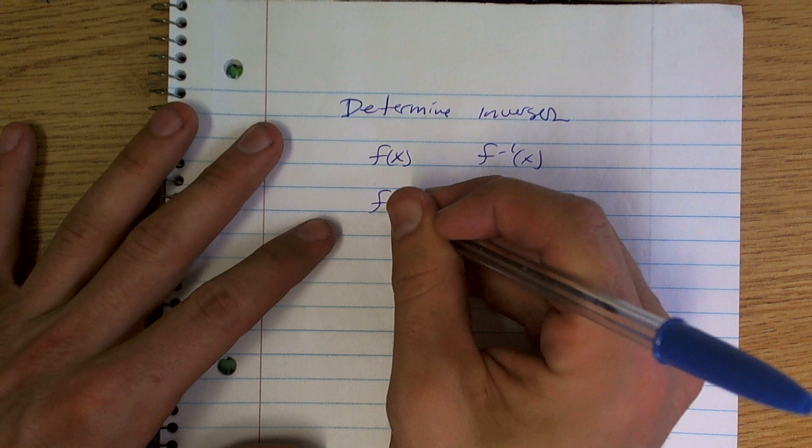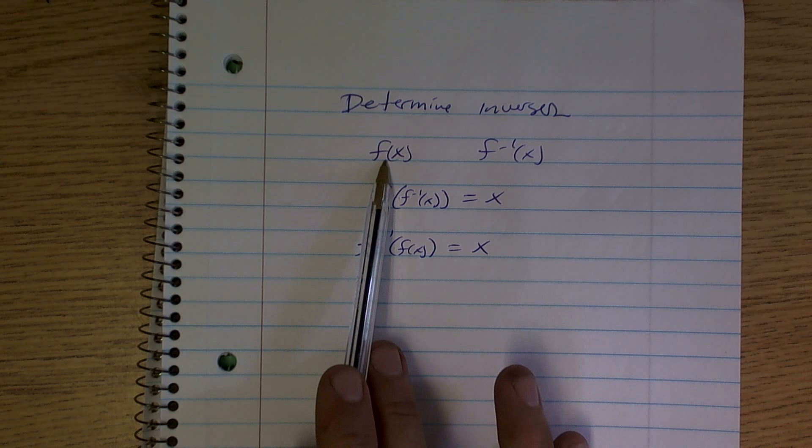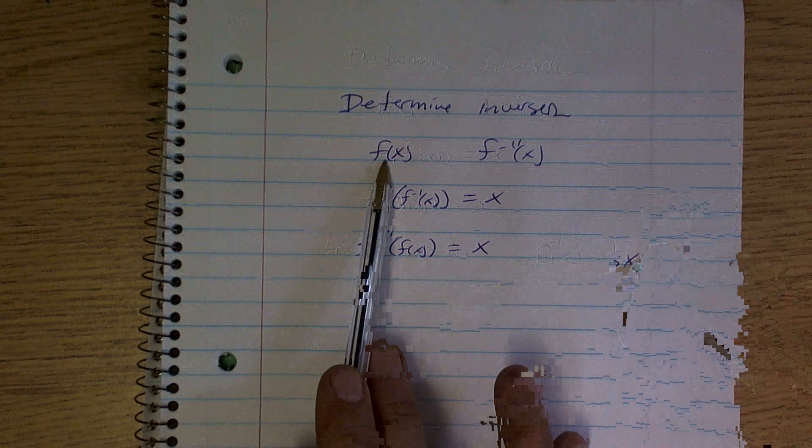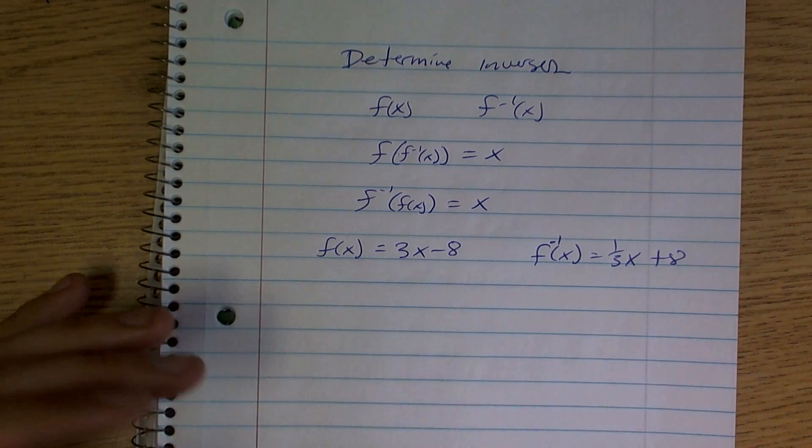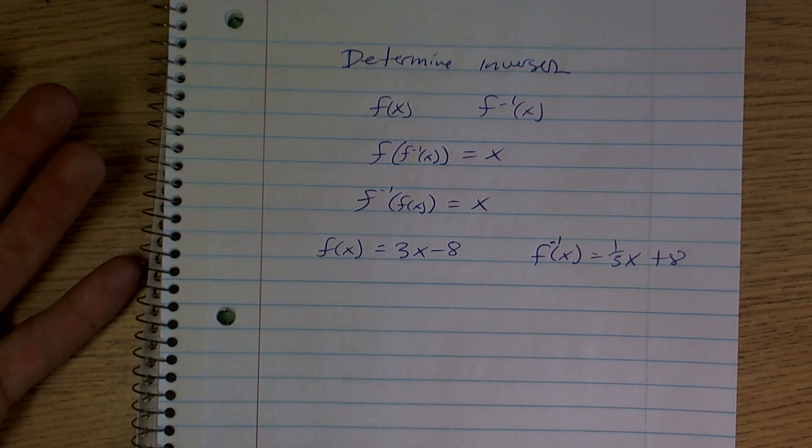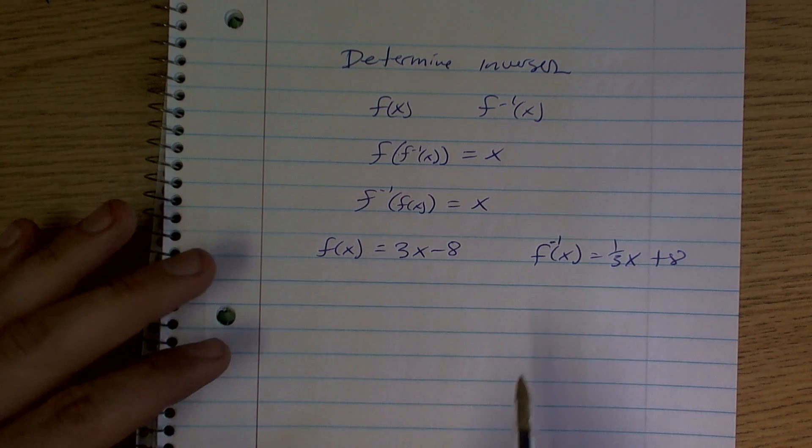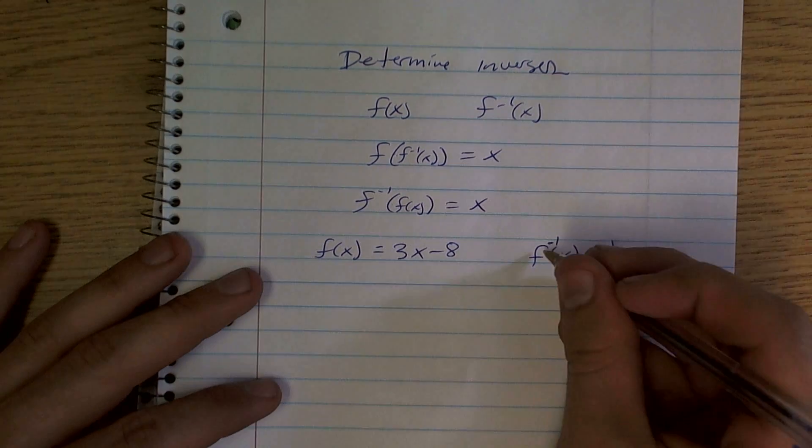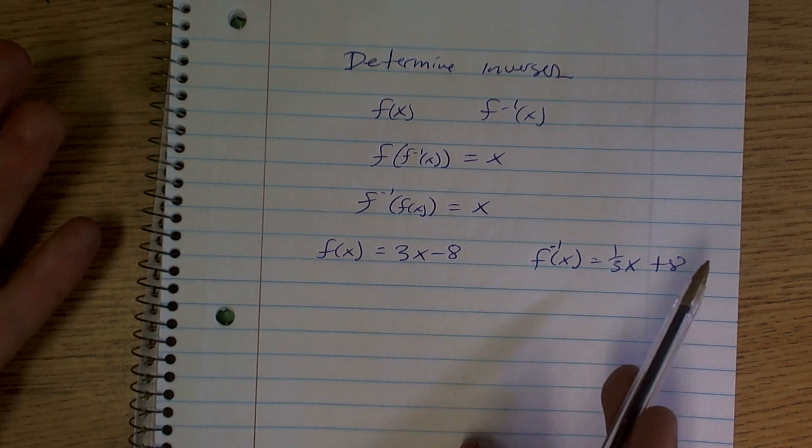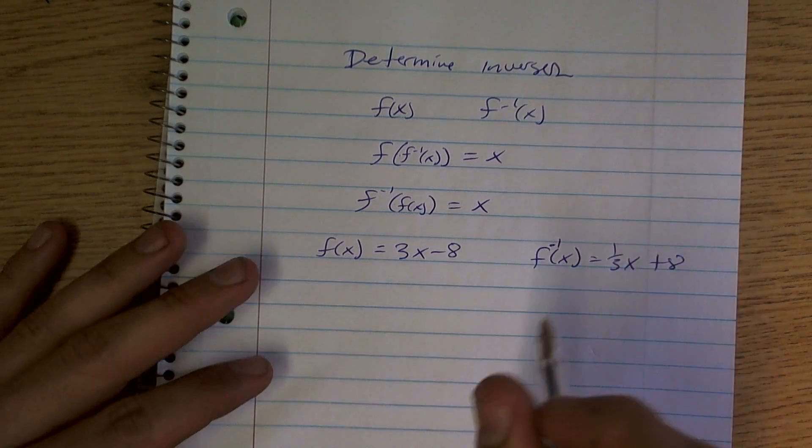You just got to remember x equals one third x plus eight. So they're saying these are inverses of each other, but let's verify them, see if that's actually correct. So here it says these are inverses, but let's see if that's correct, so let's plug them in there.